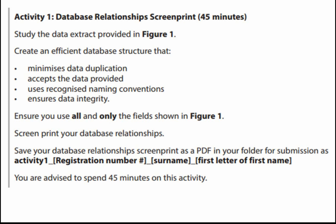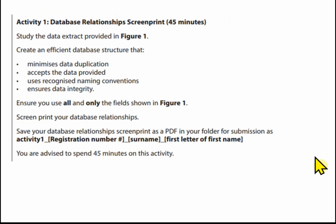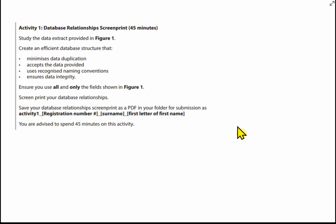We're going to take a screen print of our database relationships, and it's that which we submit in the exam — not the design we did previously. There's no template for Activity 1. You take a screen print of your relationships, paste it into a Word document, and save it as a PDF. We're advised to spend 45 minutes. We've already spent some time on the design, so actually creating the database now should be quick and accurate.